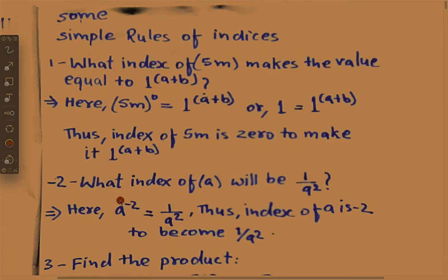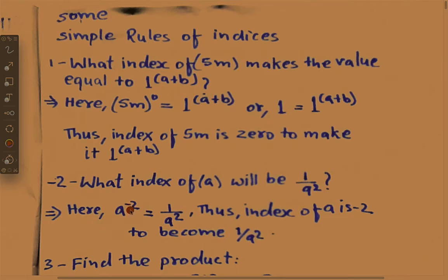In the second rule, what index of a will give 1 upon a squared? Here, a power minus 2 equals 1 upon a squared. Thus the index of a is minus 2. When the minus sign is in the exponent, it becomes 1 upon a squared. So a power minus 2 gives 1 upon a squared.